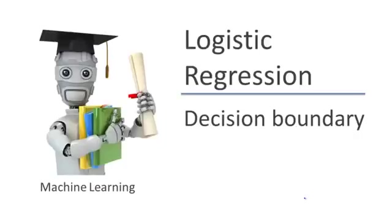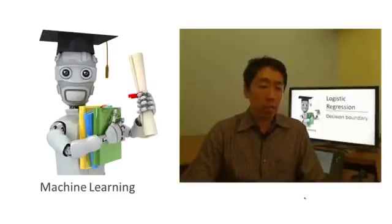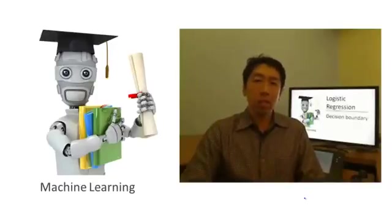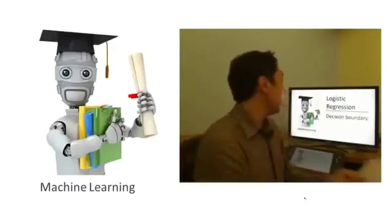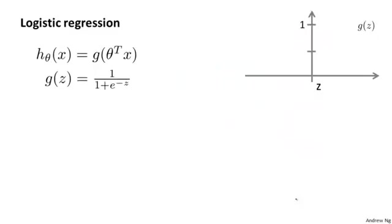In the last video, we talked about the hypothesis representation for logistic regression. What I'd like to do now is tell you about something called the decision boundary, and this will give us a better sense of what the logistic regression's hypothesis function is computing. To recap, the hypothesis is represented as h of x equals g of theta transpose x, where g is the sigmoid function. So it slowly increases from 0 to 1, asymptoting at 1. I want to better understand when this hypothesis will predict y equals 1 versus y equals 0, particularly when we have more than one feature.